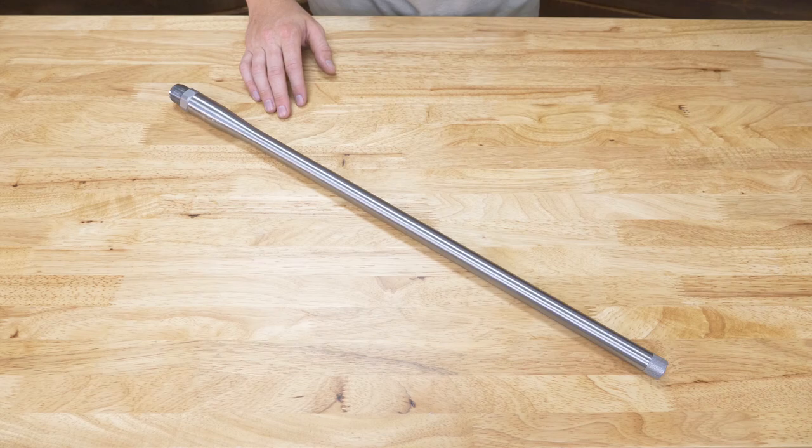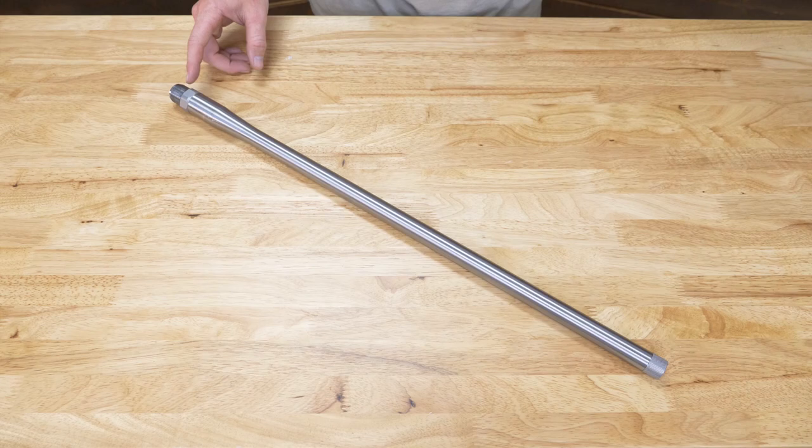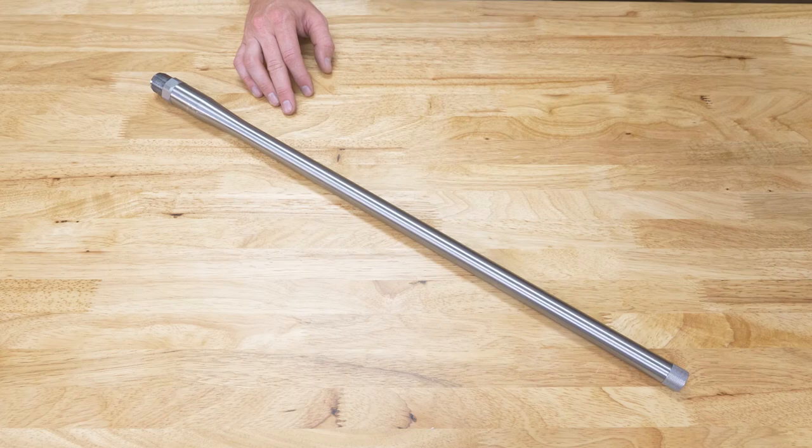Alright guys, our first contour that we are going to talk about is the taperless contours. And real quick, for reference, this is our Ruger American Prefit. It's got our variable shoulder barrel nut on here, as well as a threaded crown.